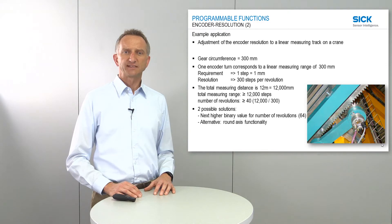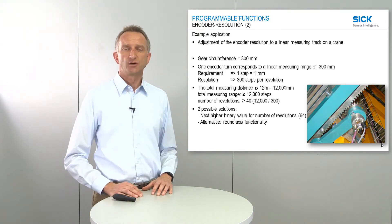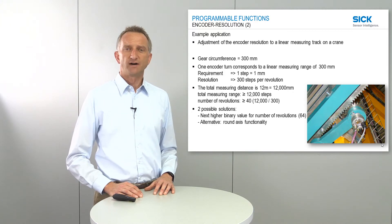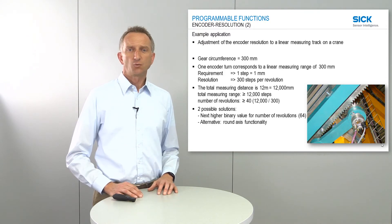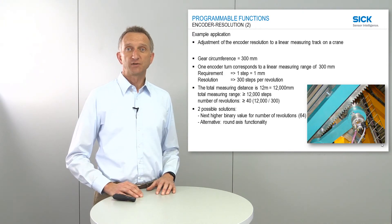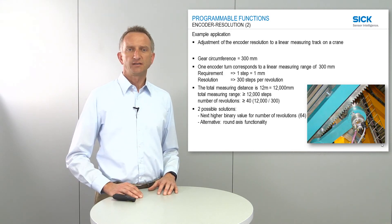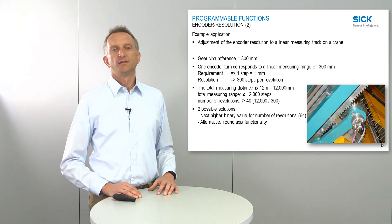The linear track overall has a length of 12 m, so our total measuring distance is 12,000 mm, equaling a total measuring range of 12,000 steps. To calculate the number of revolutions needed, we divide 12,000 by 300, which gives a result of 40 revolutions. With this result, we can either go to the next higher binary revolution value of 64, or alternatively set the scaling directly to the exact value of 40 revolutions using the so-called round axis functionality, which will be explained later.